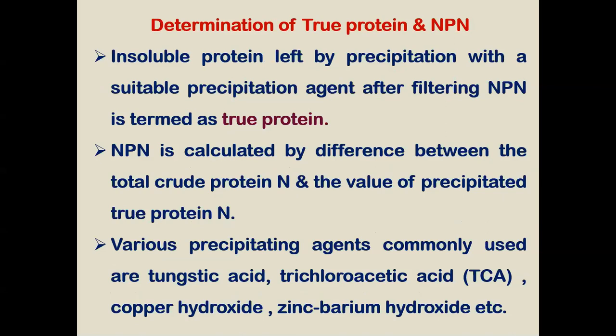For determination of true protein and non-protein nitrogen (NPN): the insoluble protein left after precipitation with a suitable precipitating agent, after filtering, is termed true protein. NPN is calculated by the difference between total crude nitrogen and the value of precipitated crude nitrogen. Various precipitating agents commonly used are tungstic acid, TCA (trichloroacetic acid), copper hydroxide, zinc, and barium hydroxide.